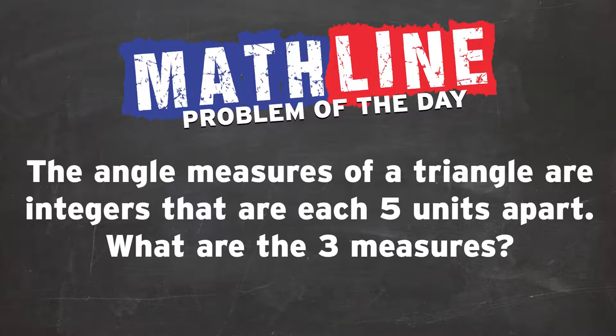The angle measures of a triangle are integers. It means there are not going to be any fractions or decimals. Yay, everybody says yay. Or negative numbers, probably on this one, because it's got to be positive.